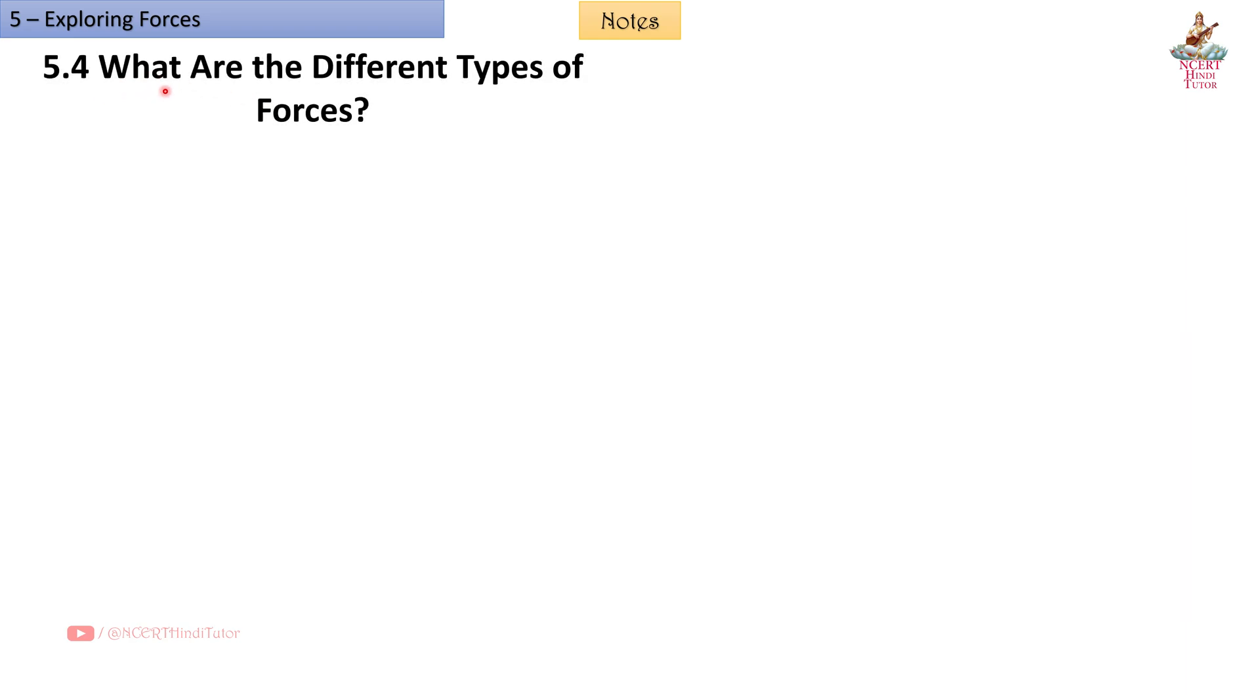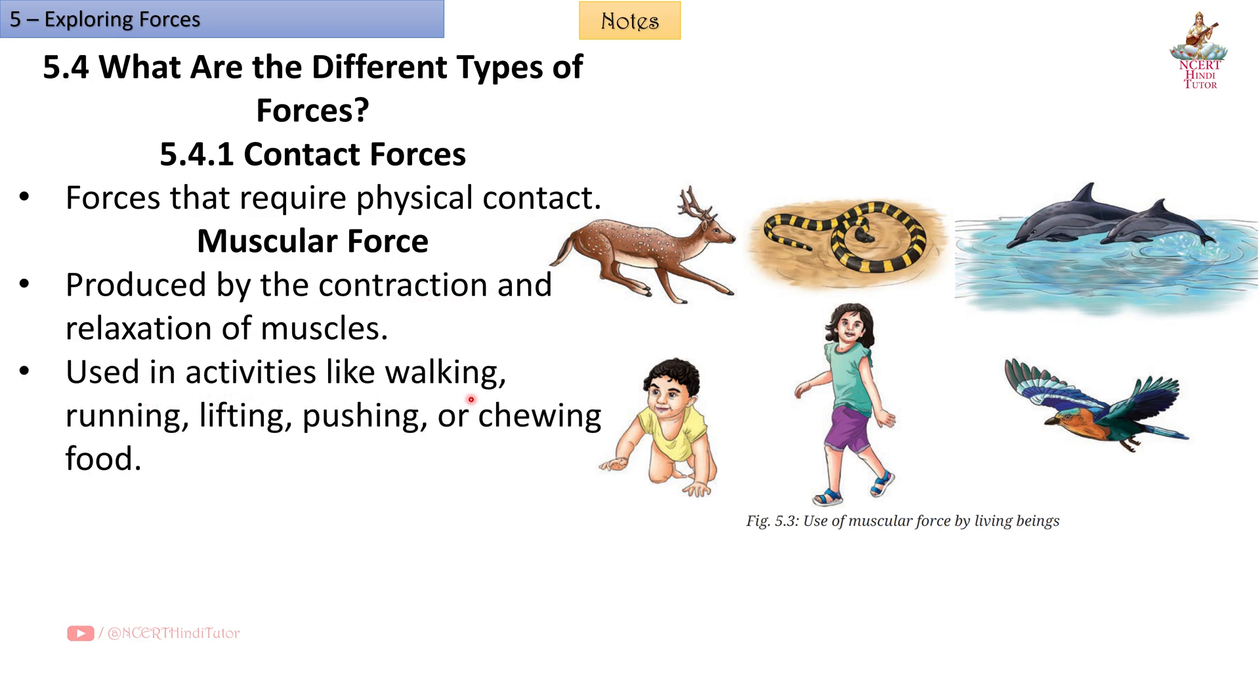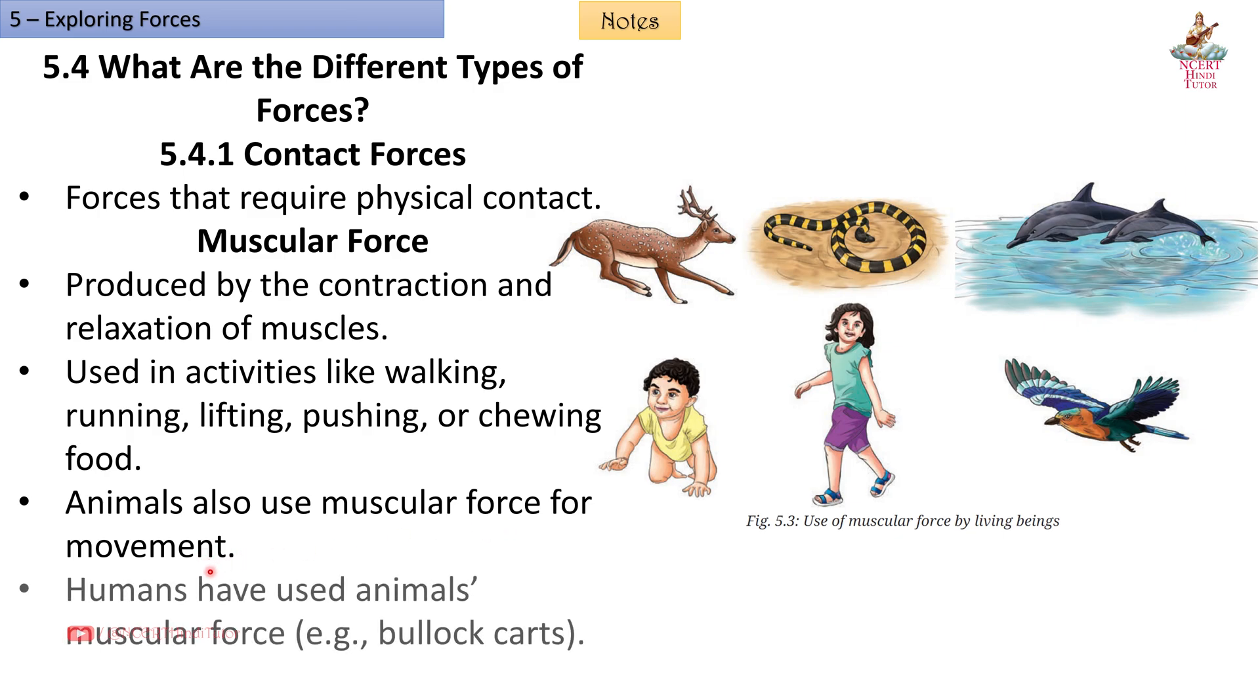5.4 What are the different types of forces? 5.4.1 Contact forces - forces that require physical contact. Muscular force is produced by the contraction and relaxation of muscles. Used in activities like walking, running, lifting, pushing, or chewing food. Animals also use muscular force for movement. Humans have used animals' muscular force, e.g. bullock carts.